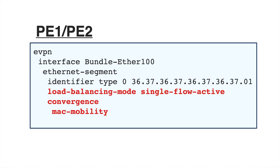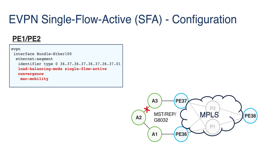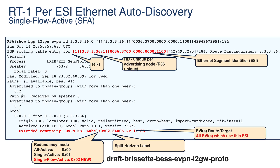The configuration for single flow active is very simple, similar to fast reroute for all-active and single-active. You can see the new load balancing mode — single flow active — with convergence and MAC mobility options, enabled on the gateway interface towards the L2 legacy network. In the route type 1 per ESI output shown at the bottom of the slide, you can see the new single flow active load balancing mode. A reference draft is also linked at the bottom of the slide for further reading.